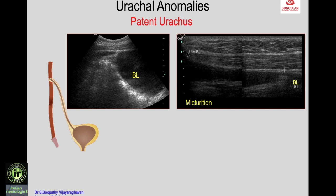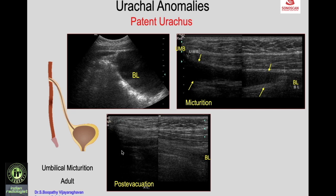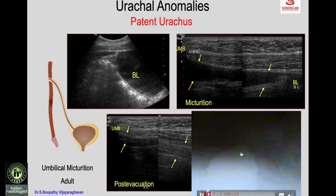A young boy presented with umbilical micturition — discharge of clear fluid from the umbilicus whenever he passed urine. Sagittal scan of the bladder showed persistent urachus at the dome, and imaging from the umbilicus down showed a fluid-filled tract from the umbilicus to the bladder. Post-voiding, the tract collapsed, confirming a patent urachus — a vesico-umbilical fistula with a patent lumen. MCU confirmed the umbilical vascular fistula.